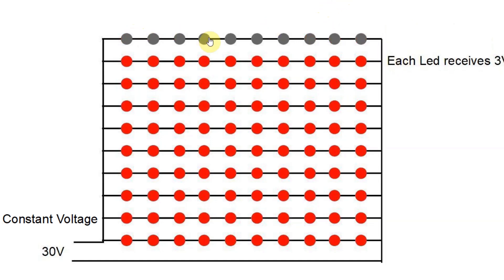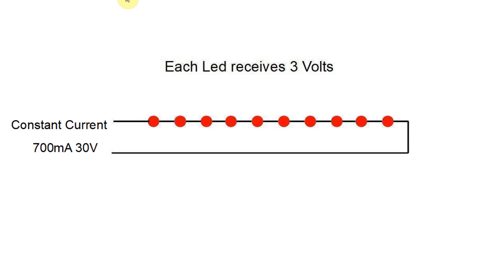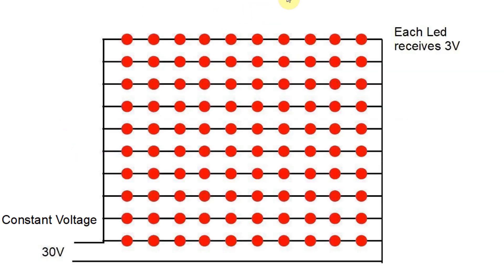However, it will not cascade down because each remaining LED receives its 3 volts, which is what it needs. So the lesson here is that if you are doing discrete LEDs, you need to use a constant current power supply. If you're doing a COB LED, you need to use a constant voltage power supply.